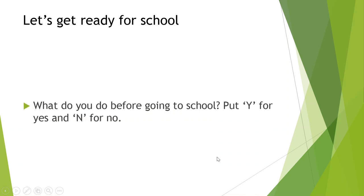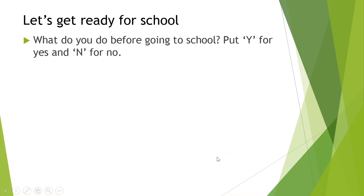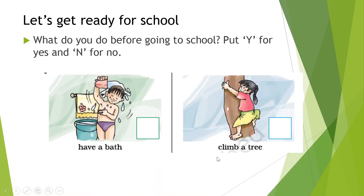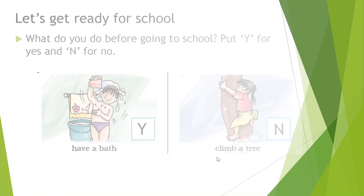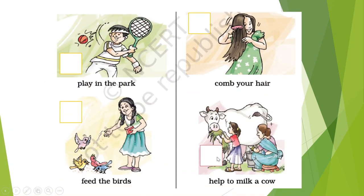Let's get ready for school. What do you do before going to school? Put Y for yes and N for no. Have a bath? Yes. Climb a tree? I don't think so. Play in the park? If you play, then write yes, otherwise no. Comb your hair? Yes. Feed the birds? If you do, then yes, otherwise no. Help to milk a cow? If you help your parents in this, then write yes, otherwise no.